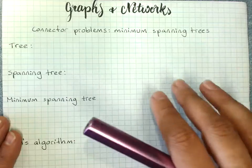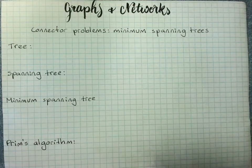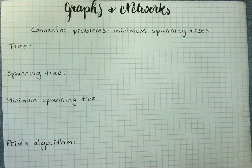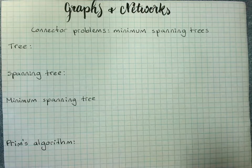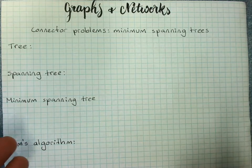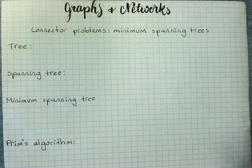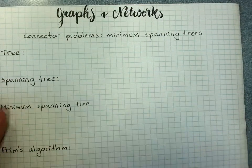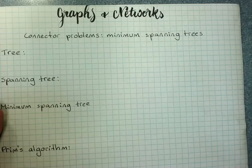Minimum spanning trees are great for things like connecting a bunch of different points with a minimum amount of, whether it be road distance or pipe or whatever it happens to be. So we're just focusing on connecting all the points in a graph.